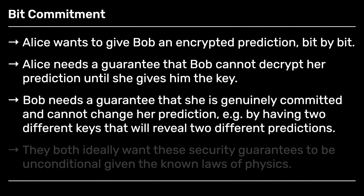Bob has a different worry. Bob's worry is that Alice is trying to fool him — that maybe she's not really predicting anything at all. Maybe she's just giving him a code now that looks like a random string of zeros and ones. She's later going to look at the IBM stock price, and she has different ways of decrypting the string that correspond to different possibilities. So after the event, she will decide which key to give him, and it will look as though she predicted what actually happened, but actually she set things up so that she can cheat by choosing her key post hoc.